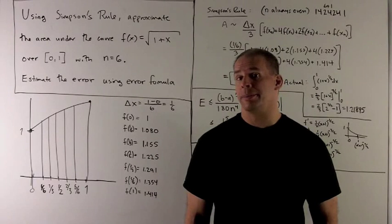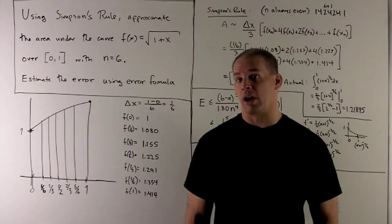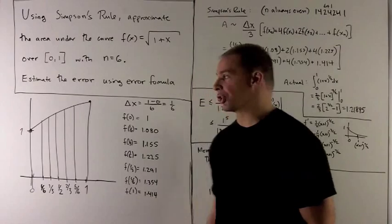When we have that area, we want to find a bound for the error using the error rule for Simpson's rule. So first, let's sketch the picture.